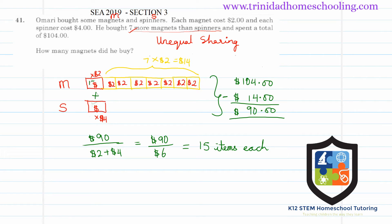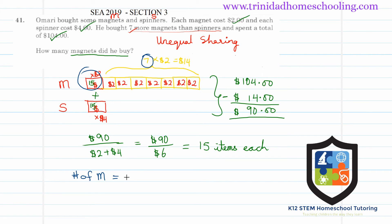So in the equal section we have 15 magnets and 15 spinners. We've used the $2, the $4, and the $104 from the question. But we haven't answered the question yet — it asks how many magnets he bought in total. He had 15 magnets in the equal part and 7 in the extra part, so the total number of magnets is 15 plus 7, which equals 22 magnets.